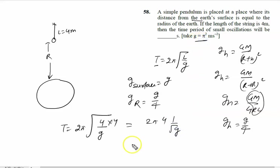That is π². So we can write 2π × 4/√g = 2π × 4/π = 8. The right answer to this problem is 8 seconds.